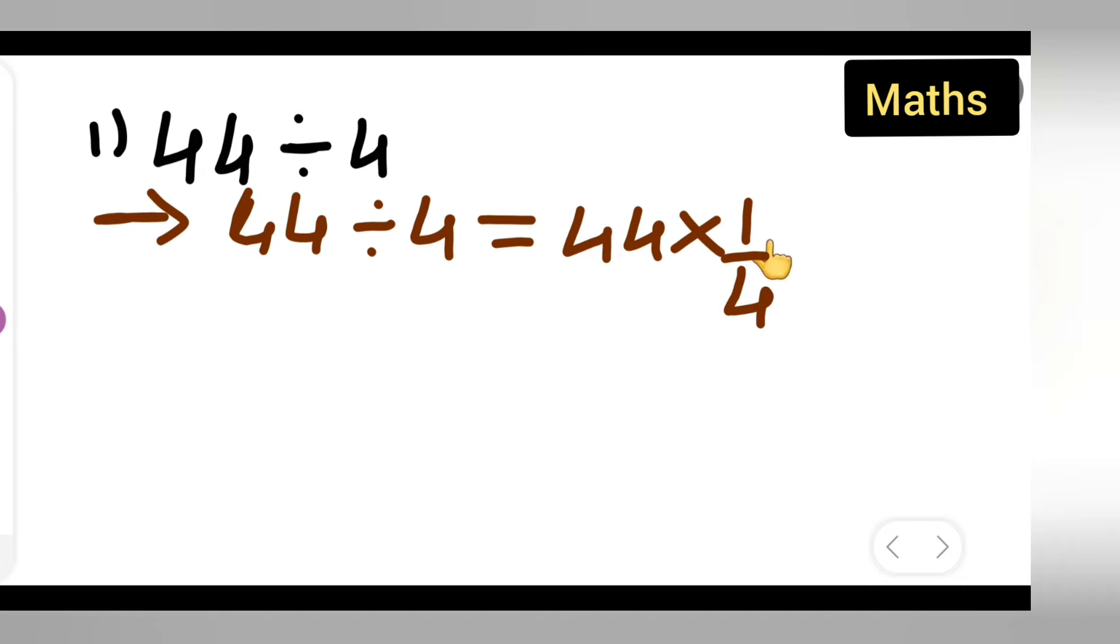What is the reciprocal of 4? 1 upon 4. So 44 multiplied by 1 upon 4. This is 44 upon 4. Now 4 ones are 4, so your answer is 11.